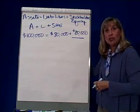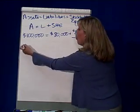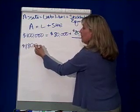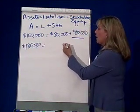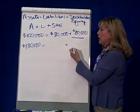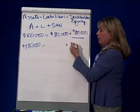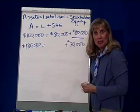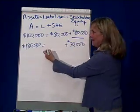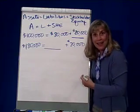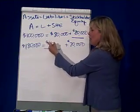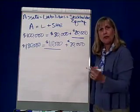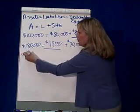Let's try another one, just to make sure you've got it. What if assets were $180,000 and stockholders' equity was $70,000? Could you tell me what liabilities are? Did you say $110,000? You're right. That seems pretty straightforward and simple. So let's make it a little bit harder.